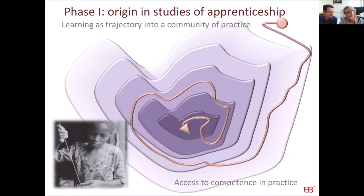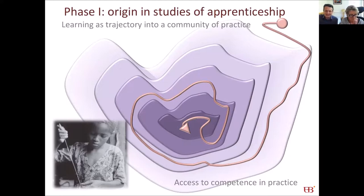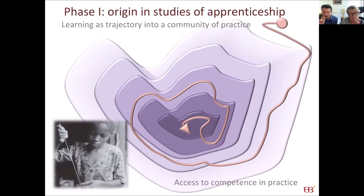Etienne coined the term community of practice, so it's interesting to hear how the term came about. We're going to present the theory as it has evolved over the last 30 years, because it's interesting to see how the concept of community of practice itself has expanded with our experience with it. Very early on, we coined the term community of practice.